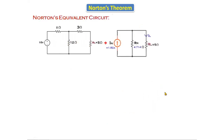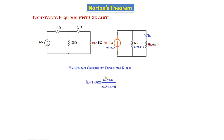Now we apply these values in the equivalent circuit. Norton's current I_N = 1.82 amperes and Norton's resistance R_N = 4.714Ω. For the given circuit this is the equivalent circuit. Now we will find the load current using the current division rule. Load current I_L equals total current multiplied by the opposite resistance divided by total resistance: I_N × 4.714 / (4.714 + 5).